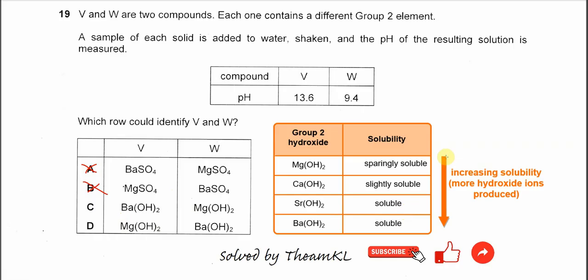From these Group 2 hydroxide solubilities, we know that going down the group, the solubility of Group 2 hydroxide increases, meaning it will produce more hydroxide ion and the pH will increase.